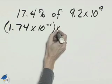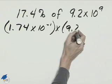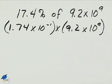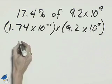Multiply that by 9.2 times 10 to the 9th. 1.74 times 9.2 is 16.008.